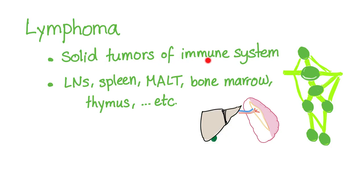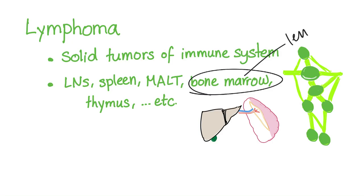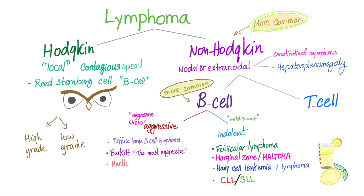Lymphoma is a solid tumor of the immune system. It could be in the lymph nodes, spleen, or mucosa-associated lymphatic tissue. When it goes to the bone marrow, we call it a leukemia, or a leukemic phase of a lymphoma. Lymphomas are Hodgkin's or non-Hodgkin's. Non-Hodgkin's are more common than Hodgkin's, and could be aggressive or indolent B-cell, or T-cell non-Hodgkin's.